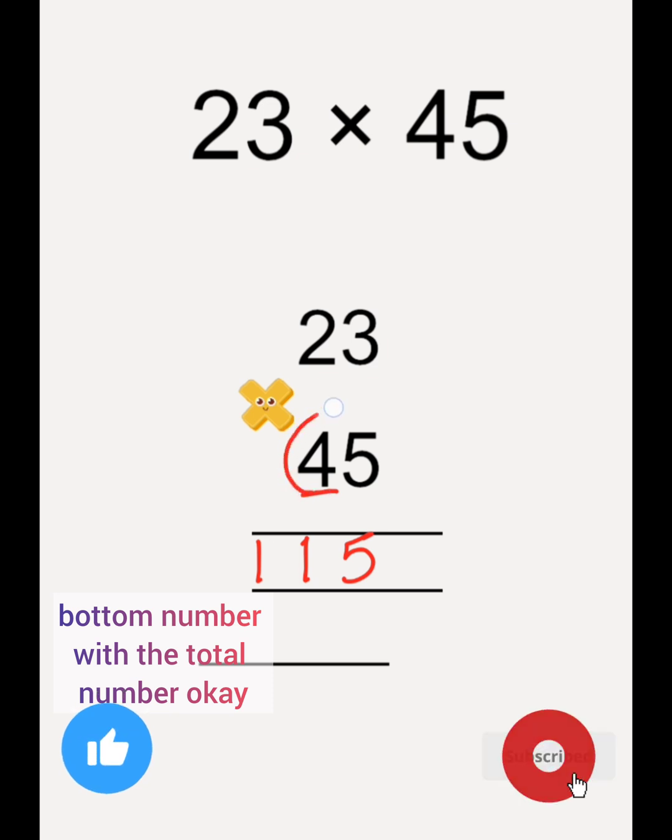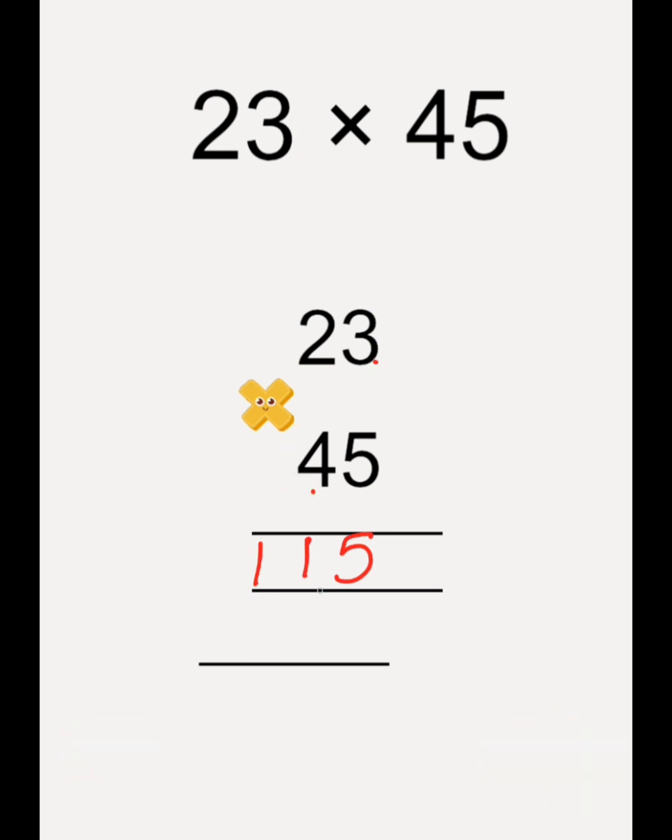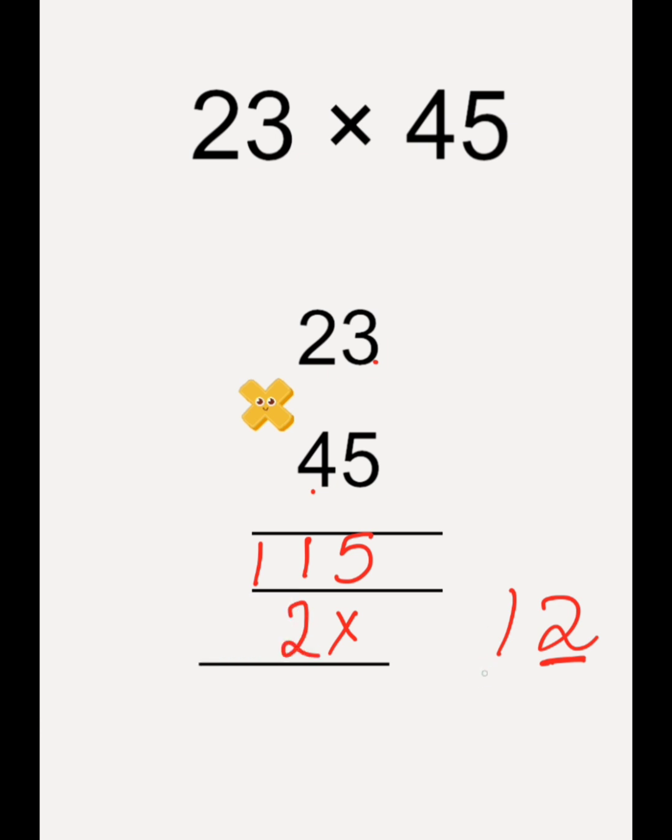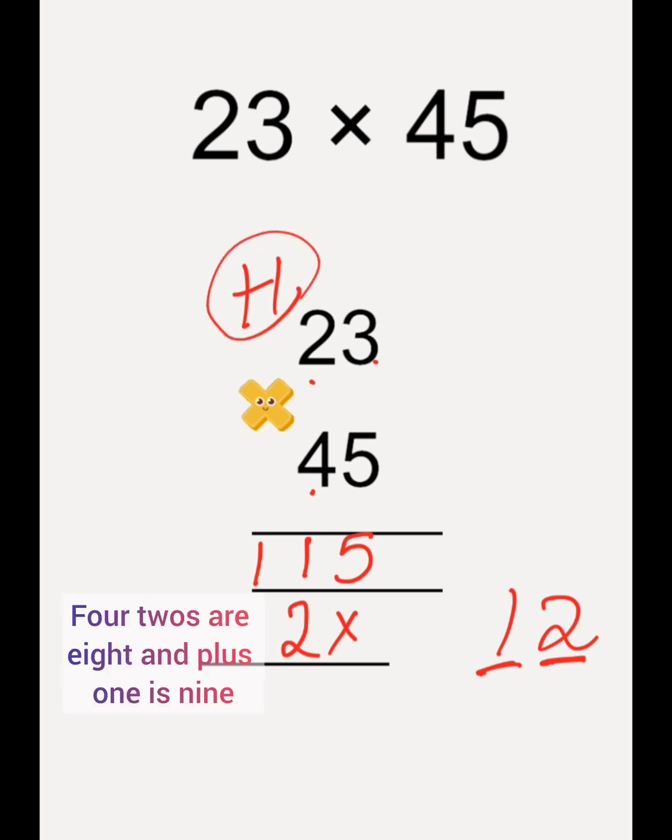Bottom number with the total number. So 4 3's are 12. You are going to write down under 10's. Under 10's you are going to write down the 2 and carry 1 here. So 4 2's are 8, very good. 4 2's are 8 and plus 1 is 9.